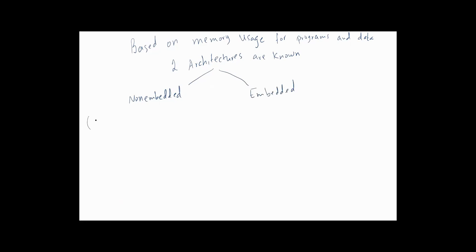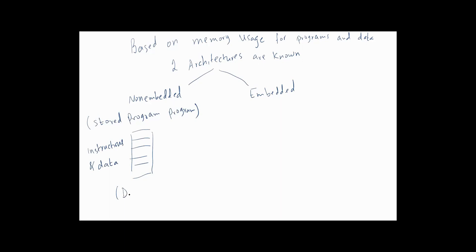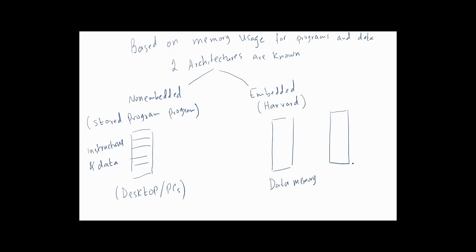The non-impeded uses the stored program concept and is known as a Von Neumann machine. Here, both the instructions and data are stored in memory. Examples of this architecture are desktop PCs. While in the impeded system, known as Harvard architecture, we have two separate memories: one for data and one for instructions, called the program memory. An example of such architecture is signal processor-based systems.